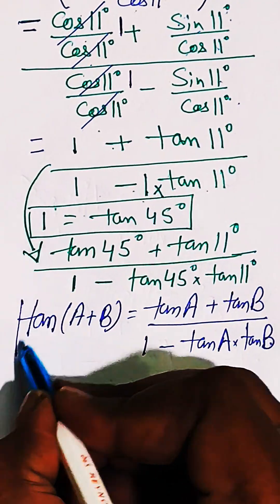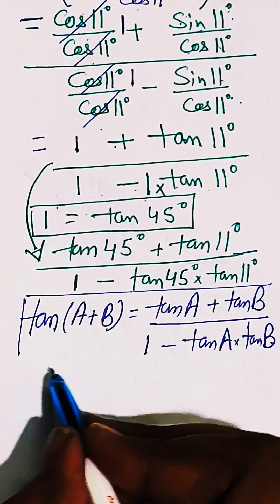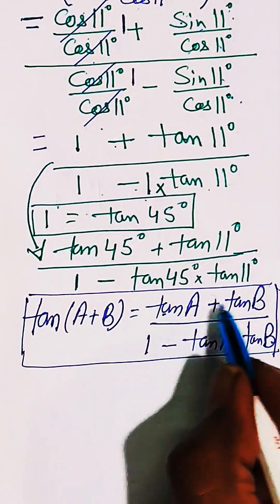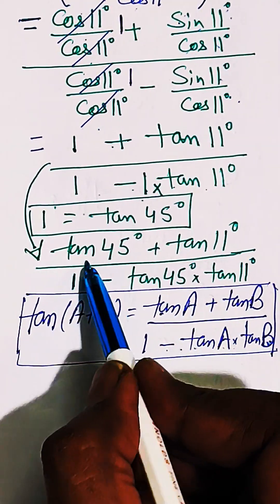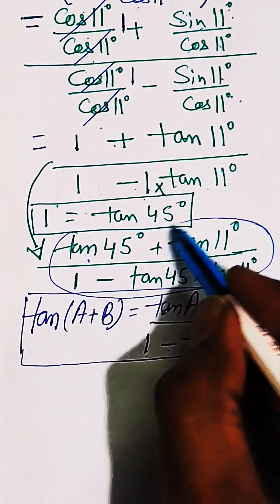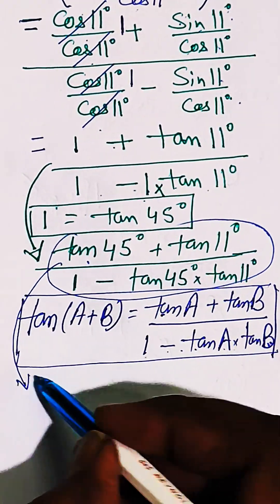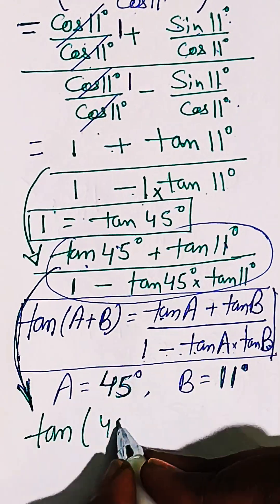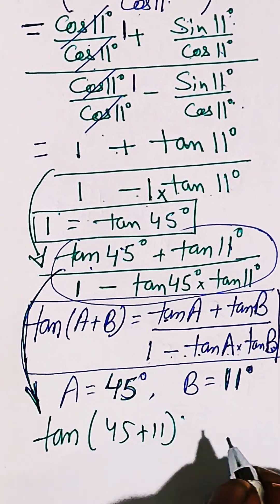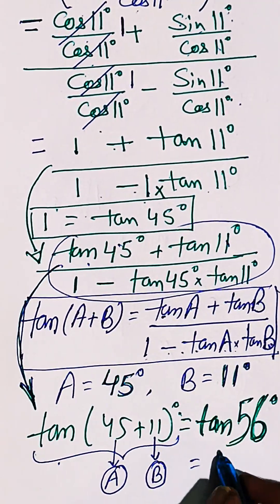Now just recall this formula of tan A plus B which is equal to tan A plus tan B by 1 minus tan A tan B. And just put the above LHS into this format, then you can see here A is nothing but 45 and B is 11. Therefore it can be written as A plus B which is equal to...